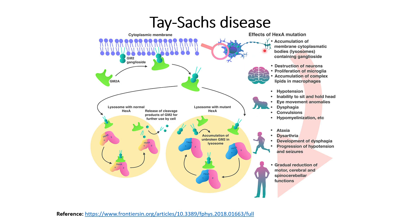The HEXA enzyme has two different subunits: one is the alpha subunit and another is the beta subunit. The HEXA gene is responsible for the alpha subunit and the HEXB gene is responsible for production of the beta subunit. If there is a mutation in the HEXA gene, this disease is known as Tay-Sachs disease. If there is a mutation in the HEXB gene, this is known as Sandhoff disease, and if there is a mutation in the GM2A gene, this is known as something else.